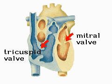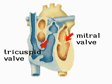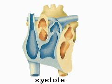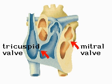The mitral and tricuspid valves between the atria and ventricles open, allowing blood into the ventricles. The heart then stops filling with blood. In the phase of contraction or systole, the heart empties and a lub sound is made by the closing of the mitral and tricuspid valves.